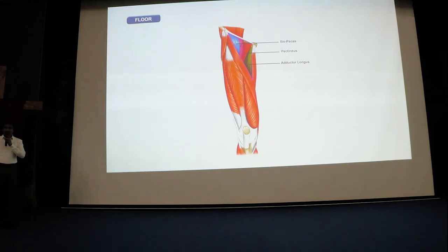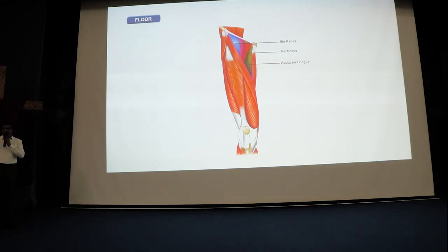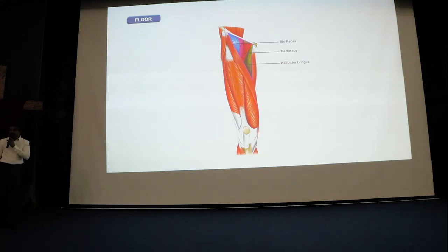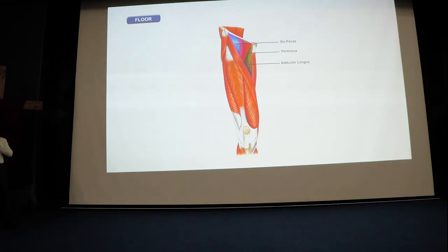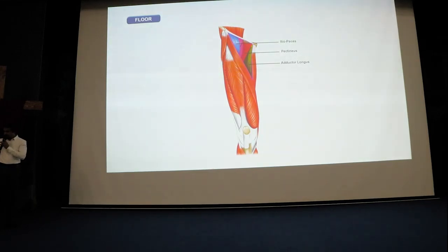To summarize the boundaries: the base is formed by the inguinal ligament; the medial border by the medial border of adductor longus; the lateral border by the medial border of sartorius; the apex is the meeting point of medial and lateral borders; and the floor is formed by adductor longus, pectineus, and iliopsoas muscles.